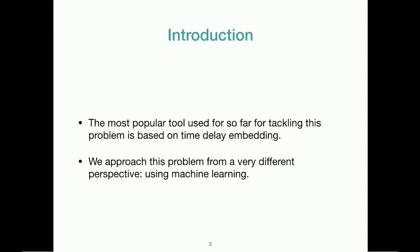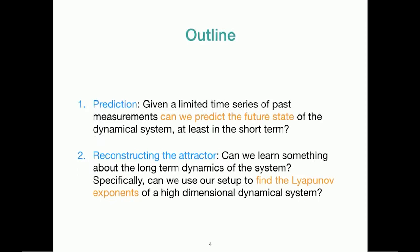This is an important question and a lot of people have looked at it using different techniques so far, and the most popular tool used for tackling this problem is based on time delay embedding. Time delay embedding has been somewhat effective for lower dimensional chaotic attractors, but we are going to be considering much higher dimensional attractors today and much higher spatial temporal chaotic systems. So we are going to approach this problem from a very different perspective by using machine learning. We will not be using time delay embedding.